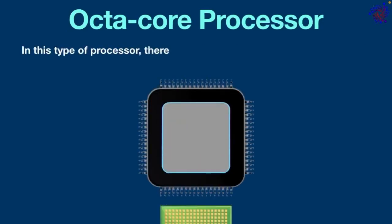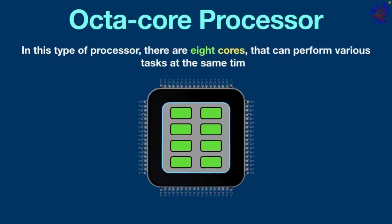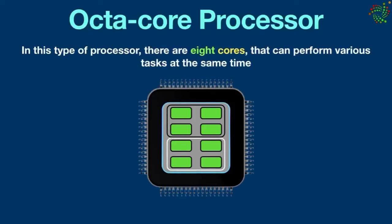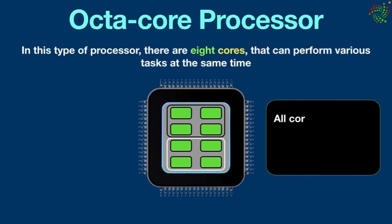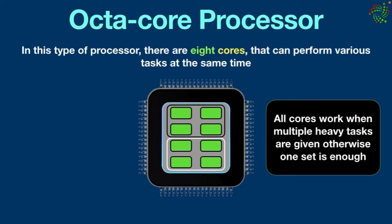Octa core processor — in this type of processor there are eight cores that can perform various tasks at the same time. Each of them acts like a standalone processing unit, allowing multitasking by dividing the workload among all eight cores. These eight cores are managed in two sets of four cores, so each set can perform the function of a quad core processing system. All cores work when multiple heavy tasks are given; otherwise, one set is enough.